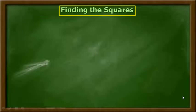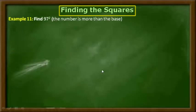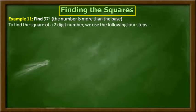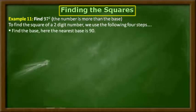The example I am going to take in this session is 97 squared. To find the square of a two-digit number, we usually follow four steps. The first step is to find the nearest base to the given number 97, and the nearest base to 97 is 90.